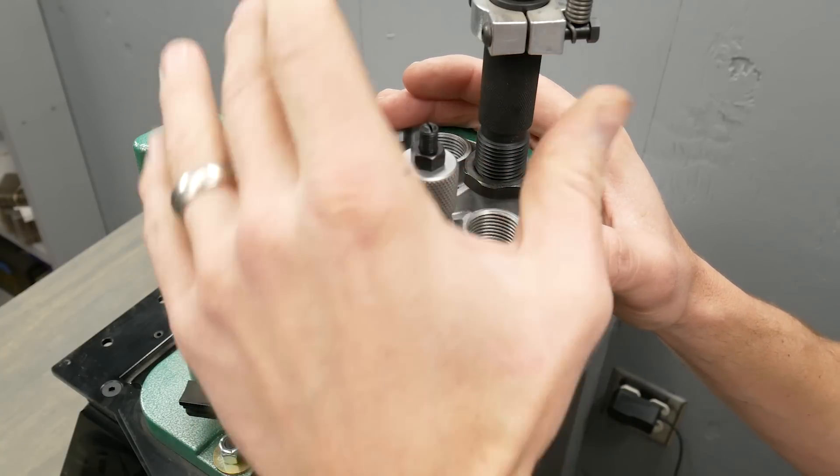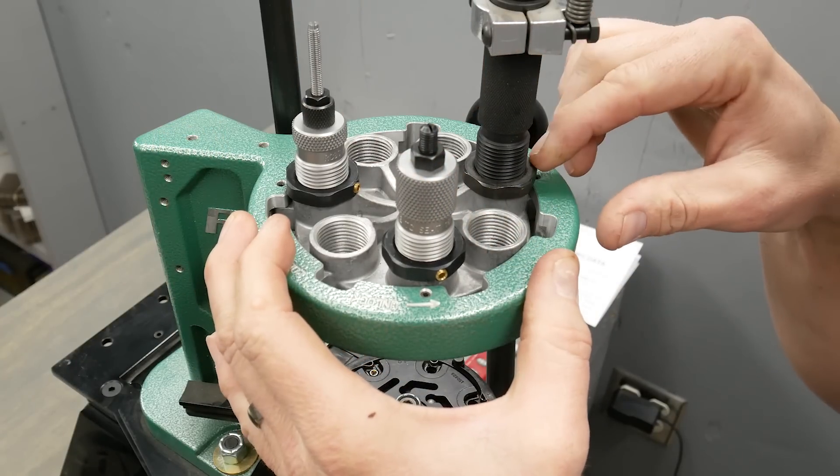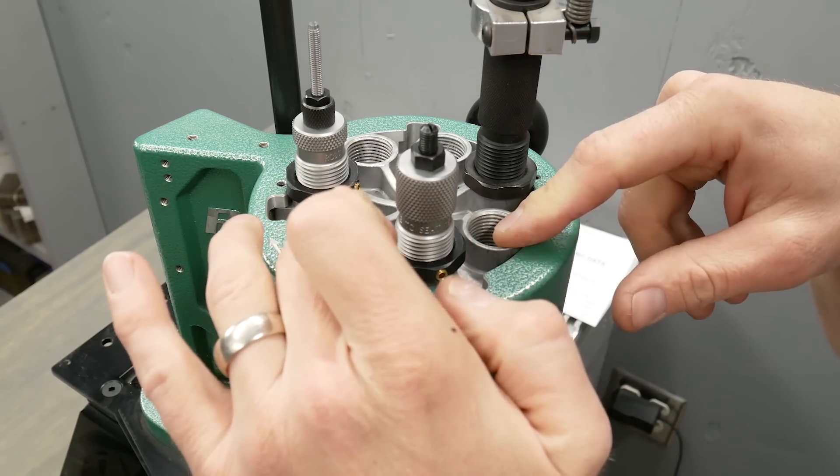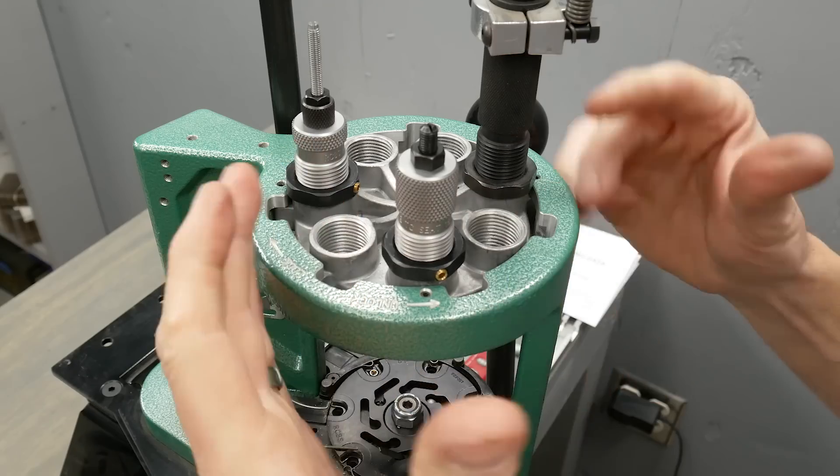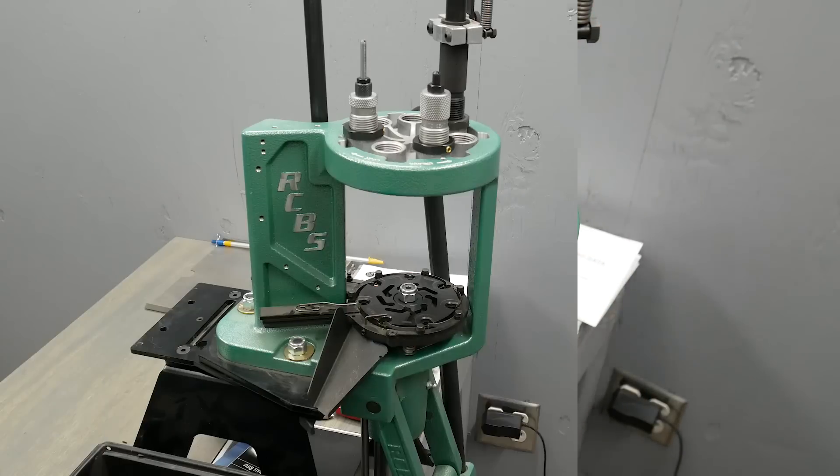So the station utilization is station number 1 Sizer Deprime, station 2 empty, station 3 empty, station 4 charge, station 5 empty, station 6 seat, and station 7 empty. We could put a powder checker in here. We could do all sorts of stuff. But this is just a great baseline setup for this type of loading.